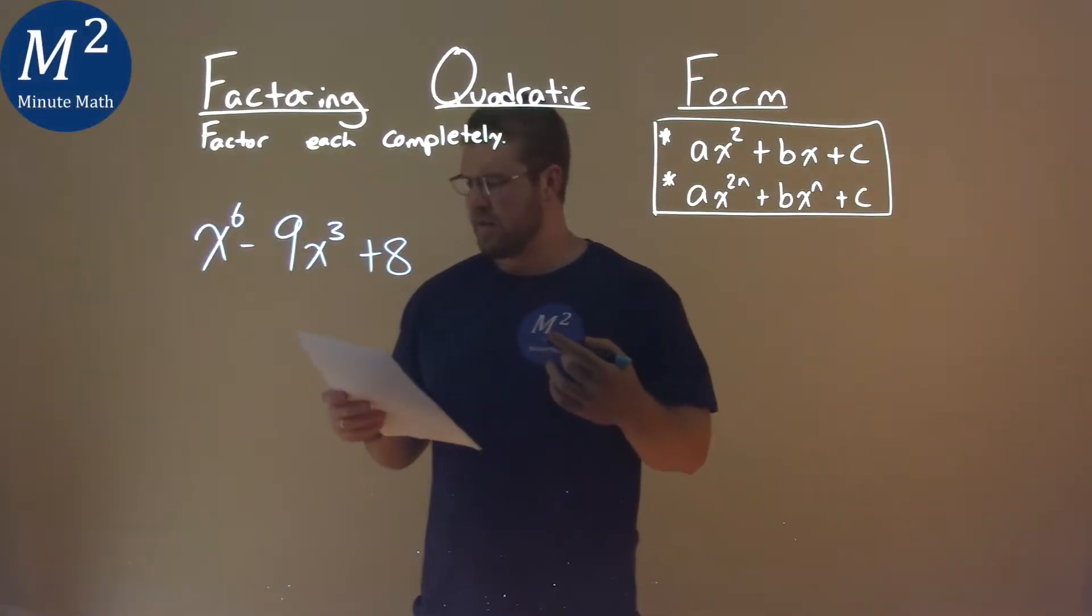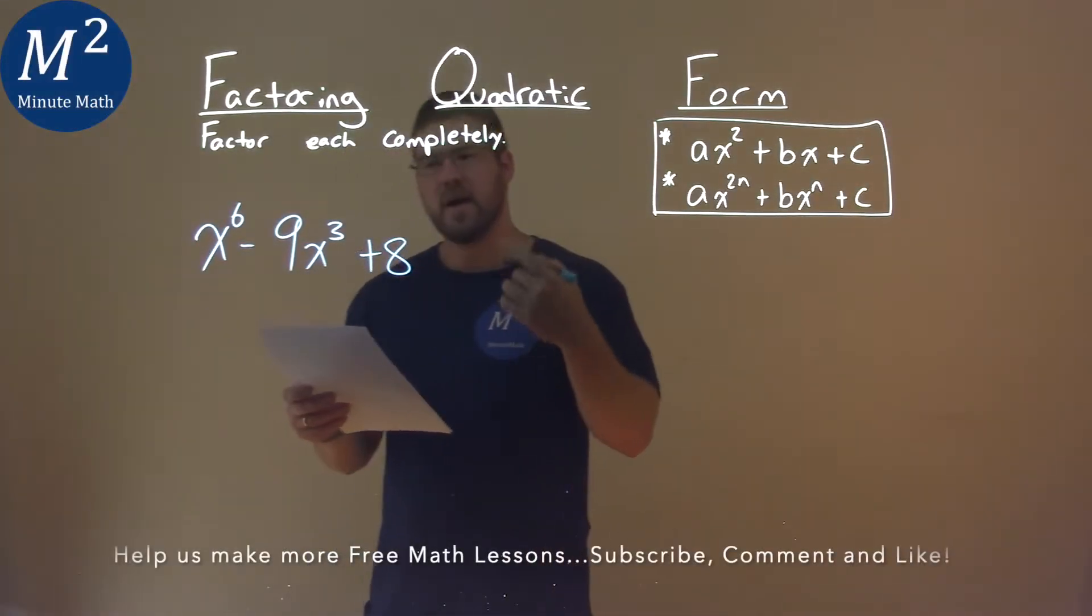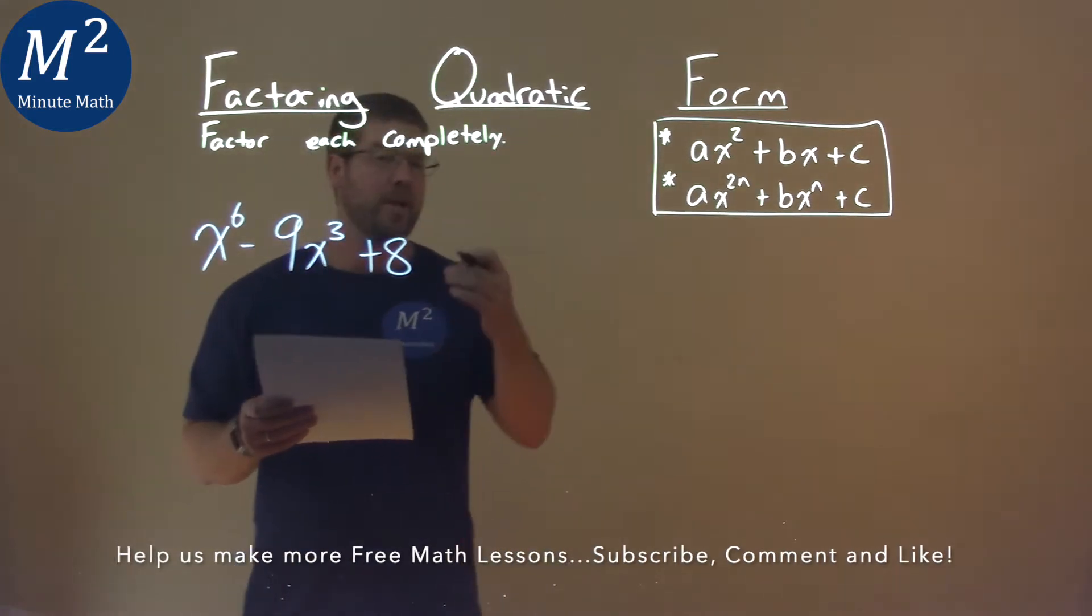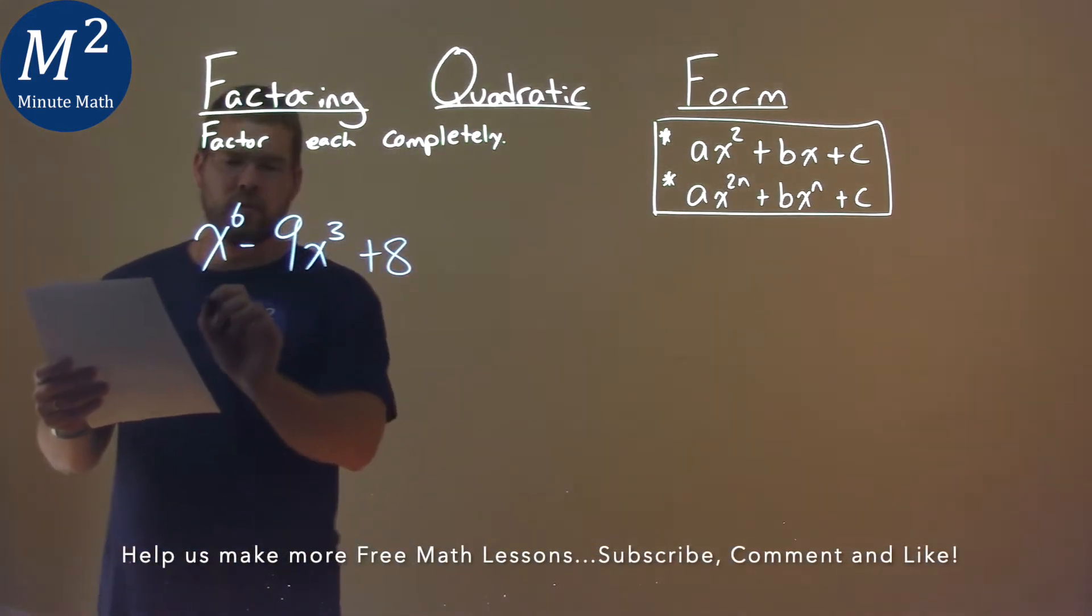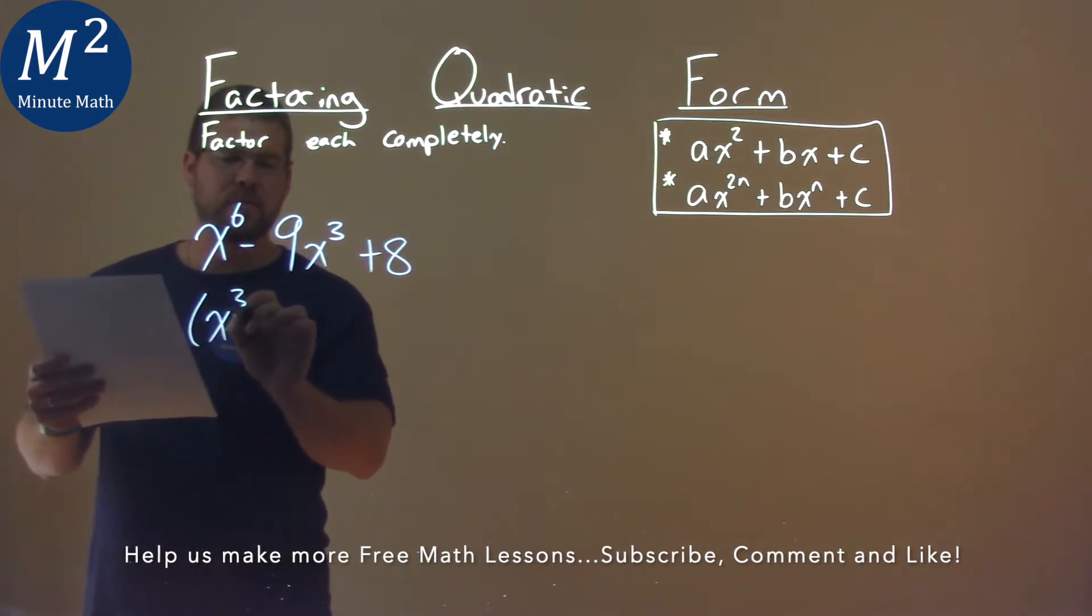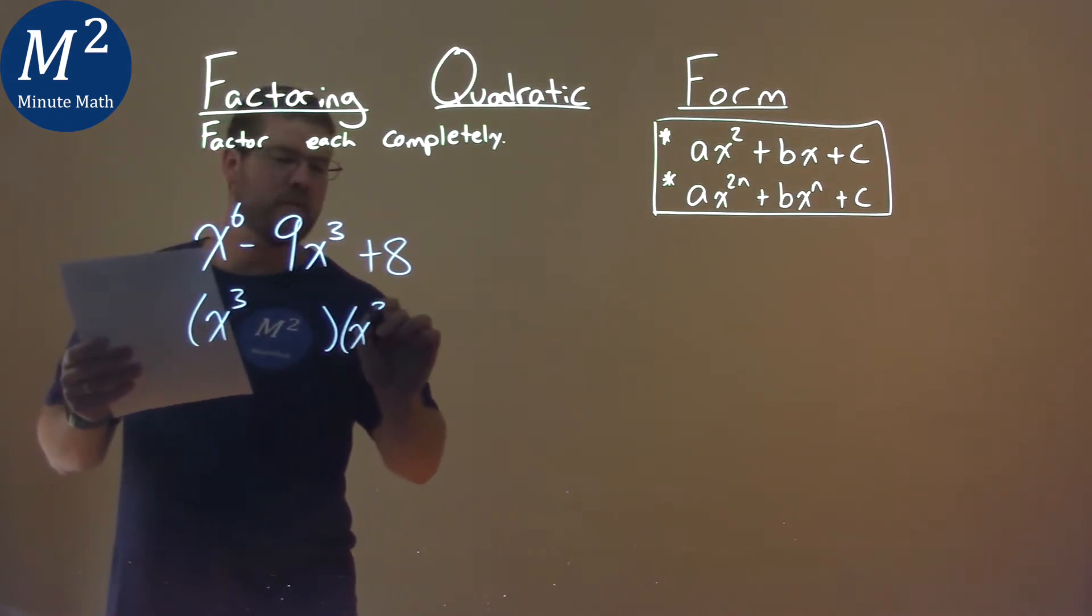We're given this problem right here, x to the 6 minus 9x cubed plus 8, and we've got to factor this completely. Well, we see it's in our quadratic form, and we know it has to be some x to the third power times some x to the third power like this.